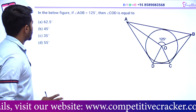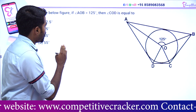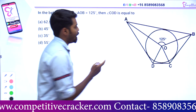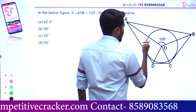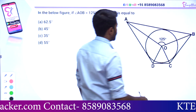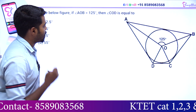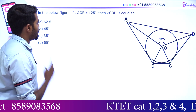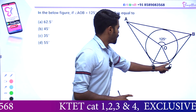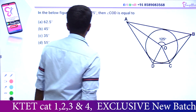In the below figure, angle AOB is equal to 125 degrees, then COD is equal to dash.